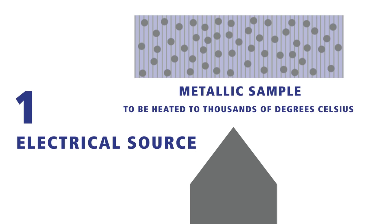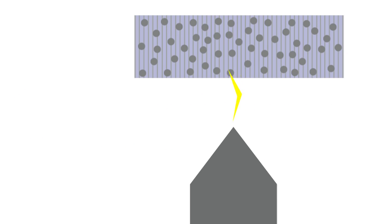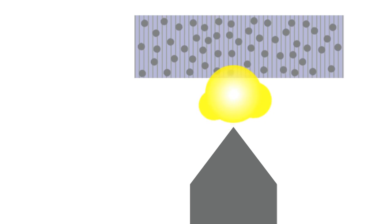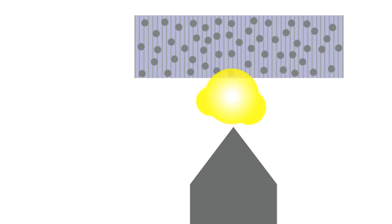This is done using an electrical high voltage source in the spectrometer via an electrode. The difference in electrical potential between the sample and electrode produces an electrical discharge. This discharge passes through the sample, heating and vaporizing the material at the surface and exciting the atoms, which then emit element-characteristic emission lines.